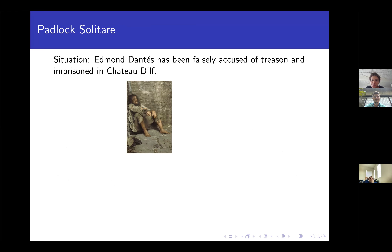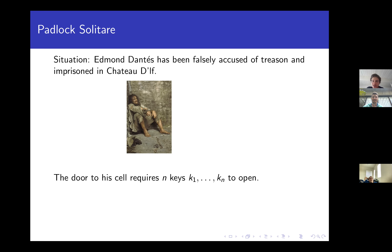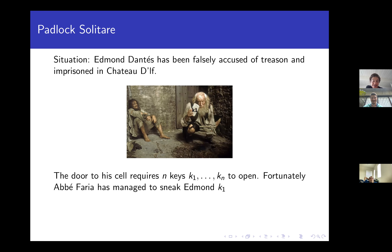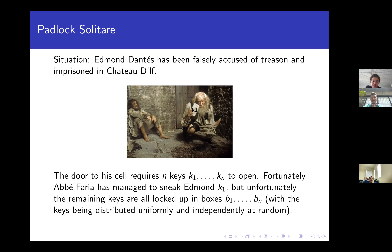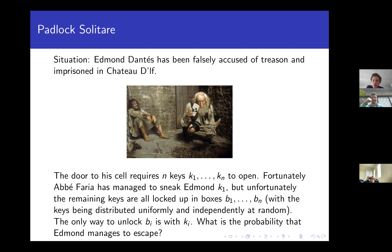Let's start with a very realistic scenario. Imagine you're Edmund Dantes, who has been falsely accused of treason and imprisoned in Château d'If — there will be very minor spoilers for The Count of Monte Cristo, but it's 150 years old, so that's on you. Edmund's prison cell requires N keys to open. Fortunately, his friend has managed to get him the first key, but the remaining keys are scattered in N boxes, distributed uniformly and independently at random. The only way to open box i is if you have key i. What's the probability that Edmund can escape?